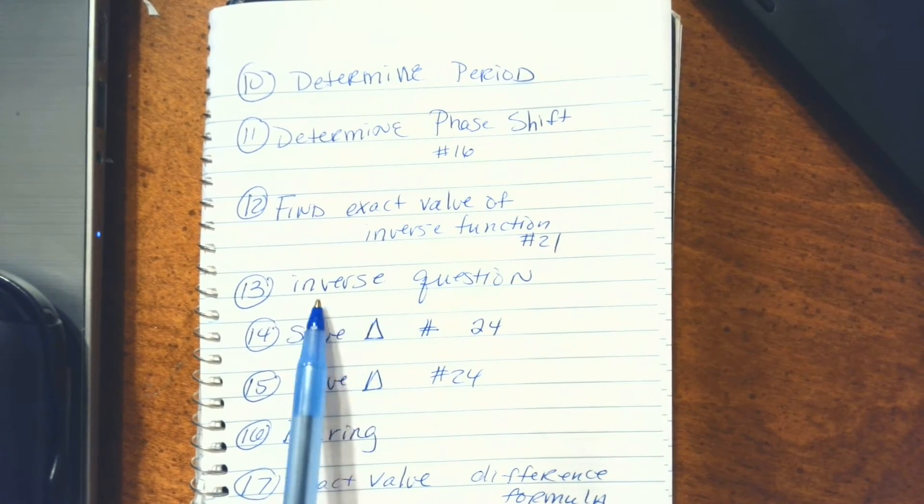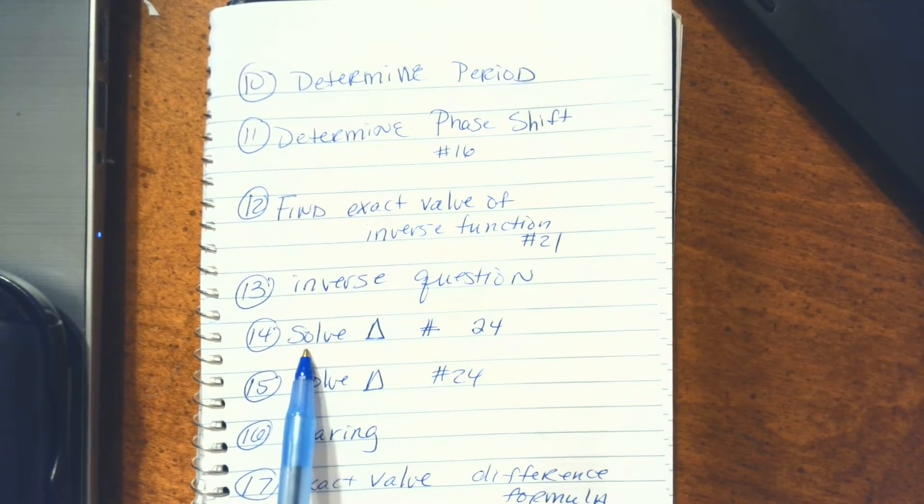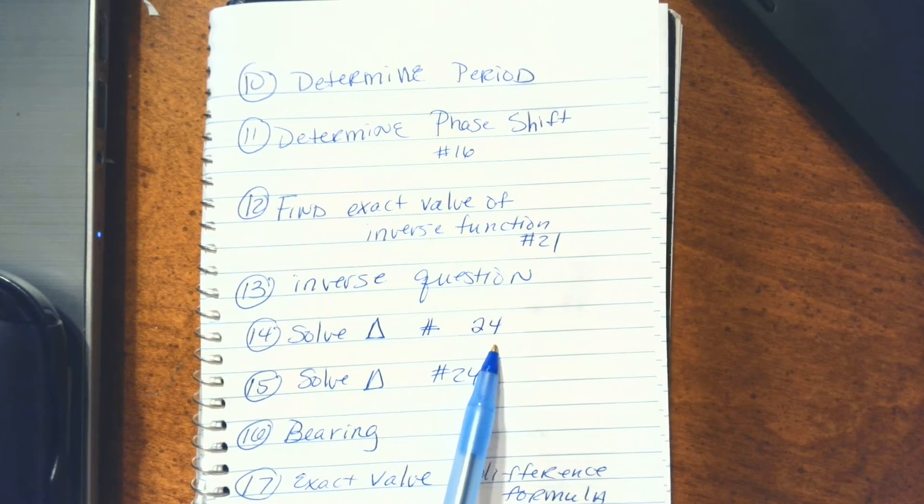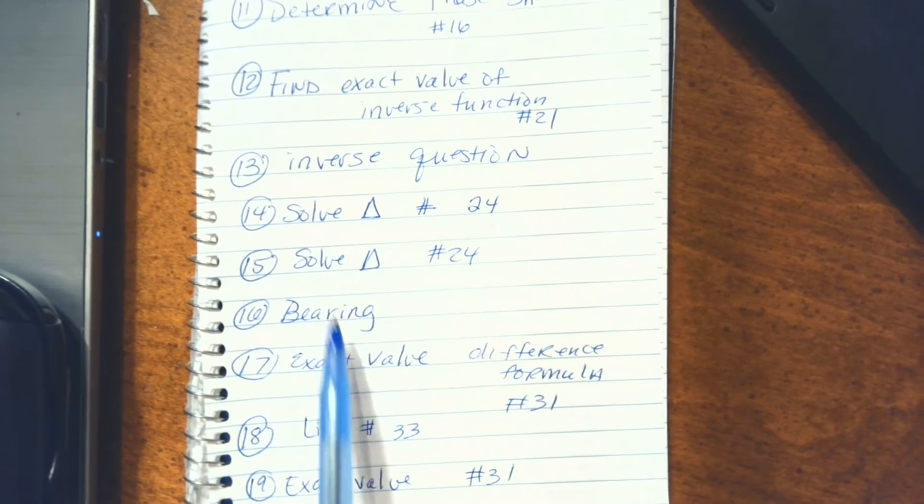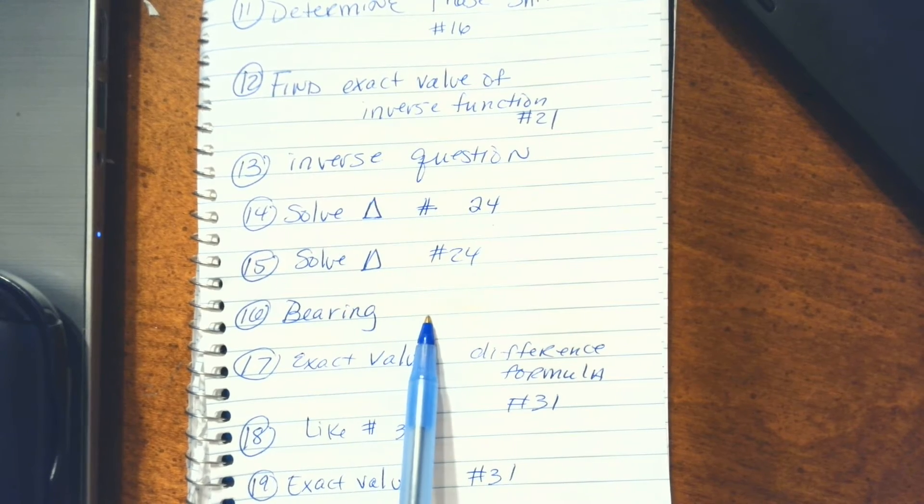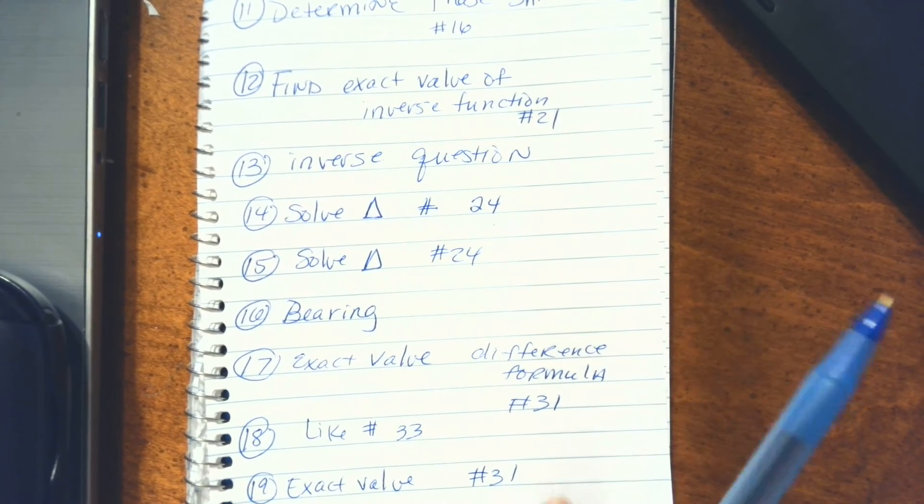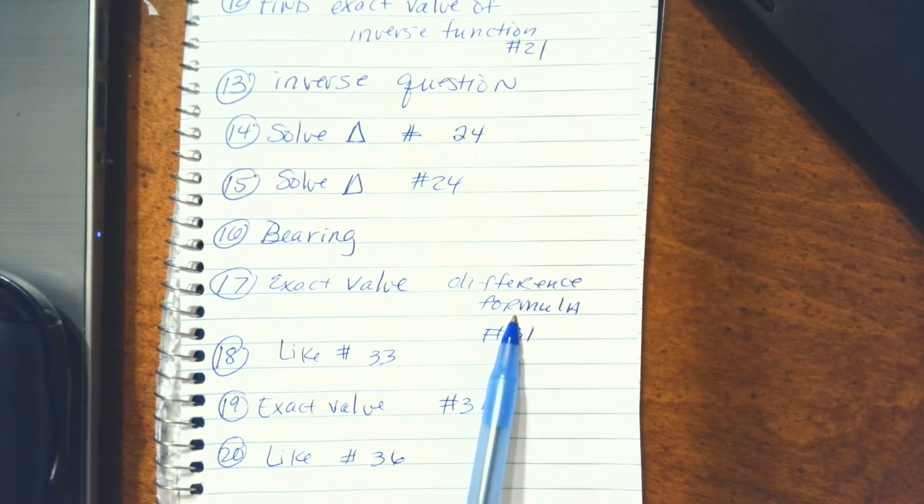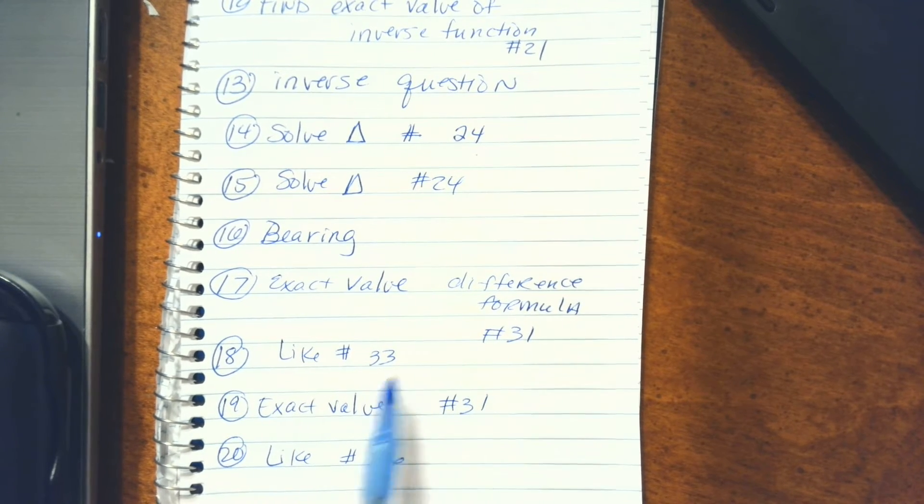You're going to have to find the exact value of inverse functions like number 21 on the study guide. Another inverse question. Solve a triangle like number 24—there's two of those. A bearing problem, so you'll need to know about your bearings from chapter four.